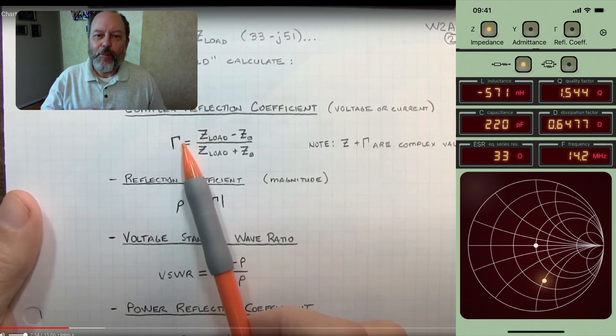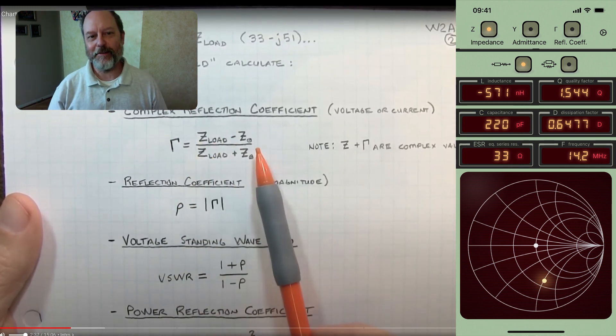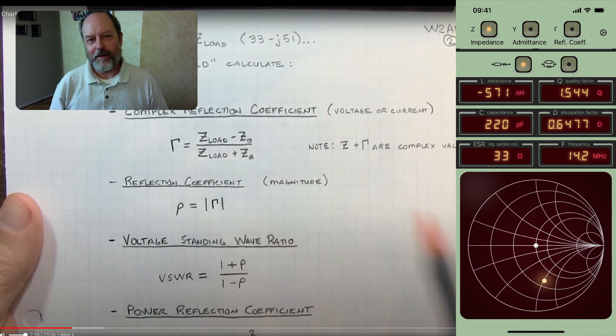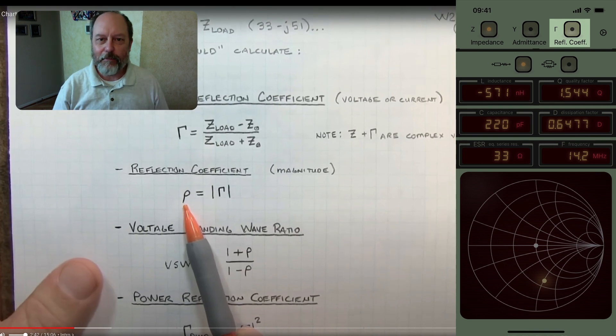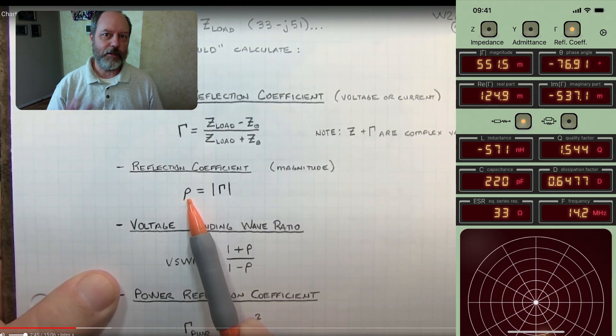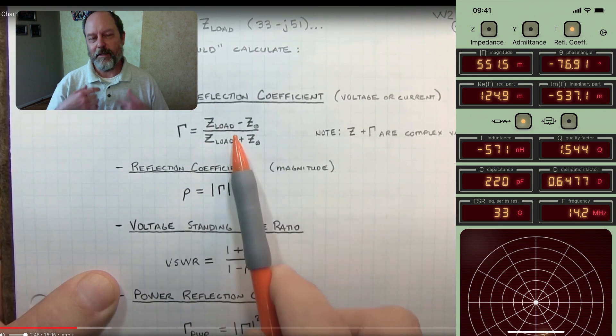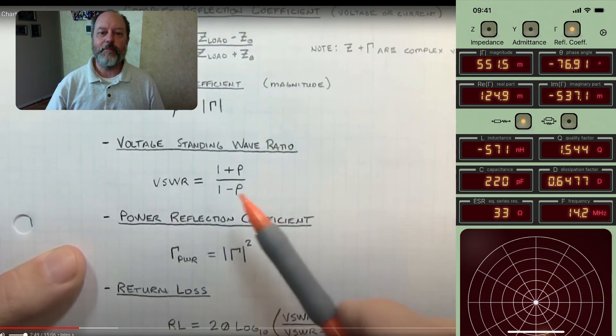So then next, Alan enumerates many of the things that you could calculate to characterize this impedance. And one thing that you could immediately do with the impedance converter app is flip to the reflection coefficient view. And that's where you would see the reflection coefficient gamma, and you would see its magnitude and phase, or its real and imaginary parts.